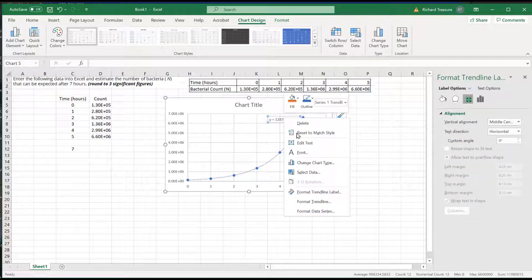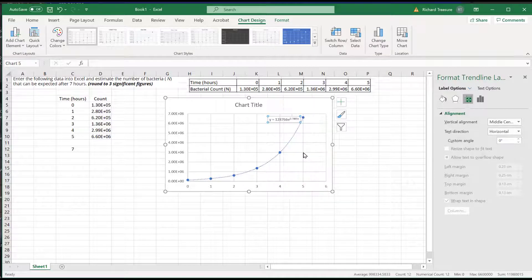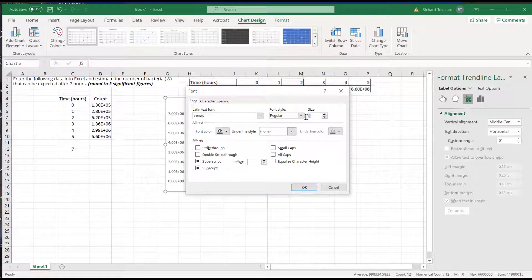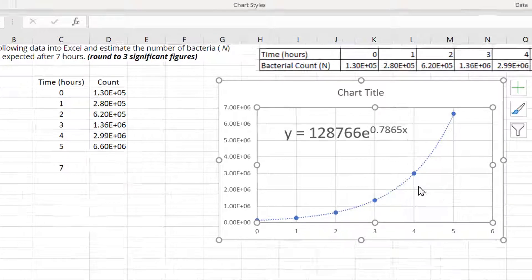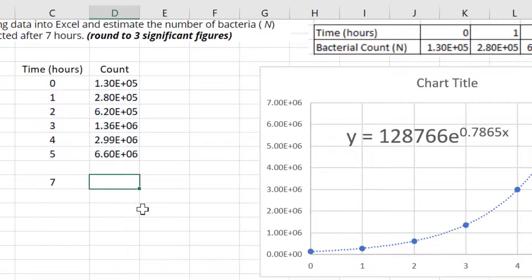I'll just increase the size of this so it's easier to see. We now have the model of best fit for the data, and we can use this to make predictions going forward. The question is how many bacteria we might expect after seven hours, given ideal conditions and the rate continues to increase the same way.